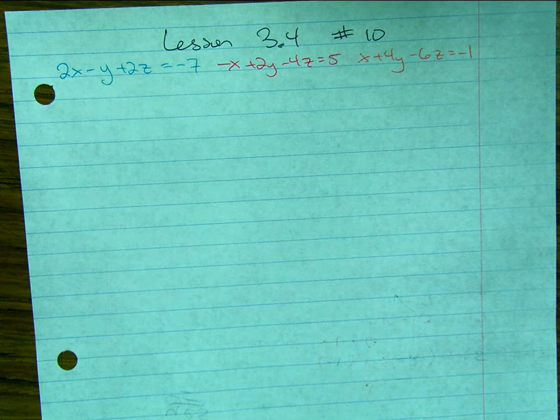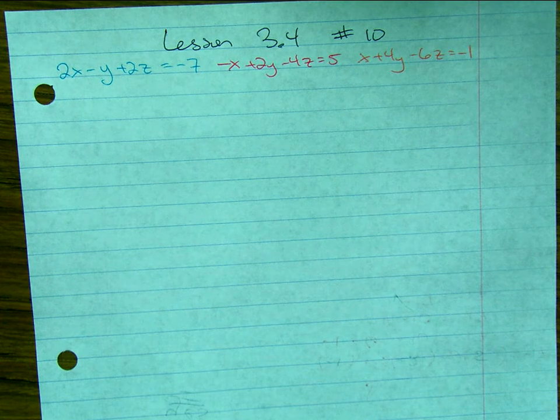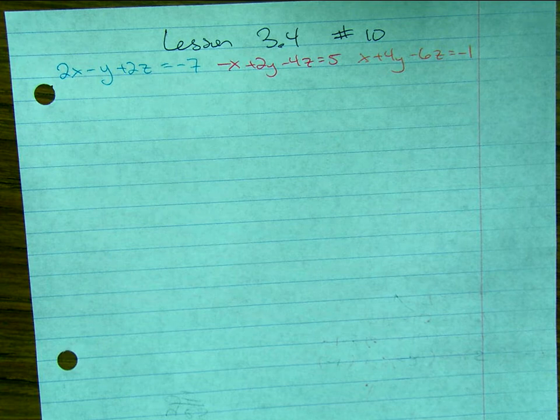Alright, yet another fun one. Here's number 10 from tonight's homework. Three Variables System. Now, on your homework tonight, some of them say solved by substitution, others solved by elimination.